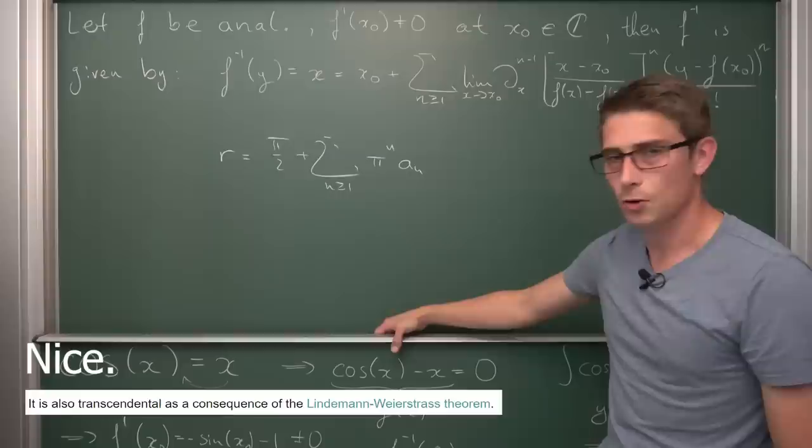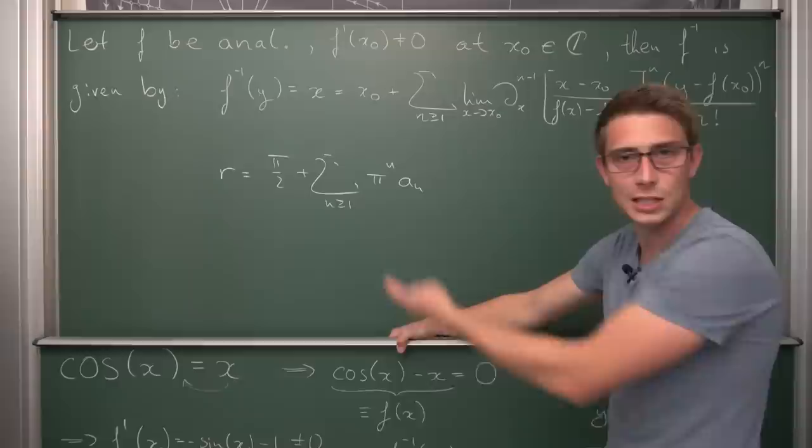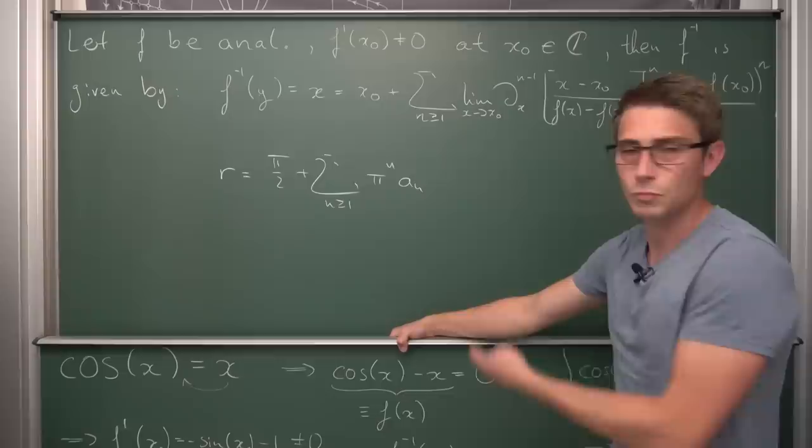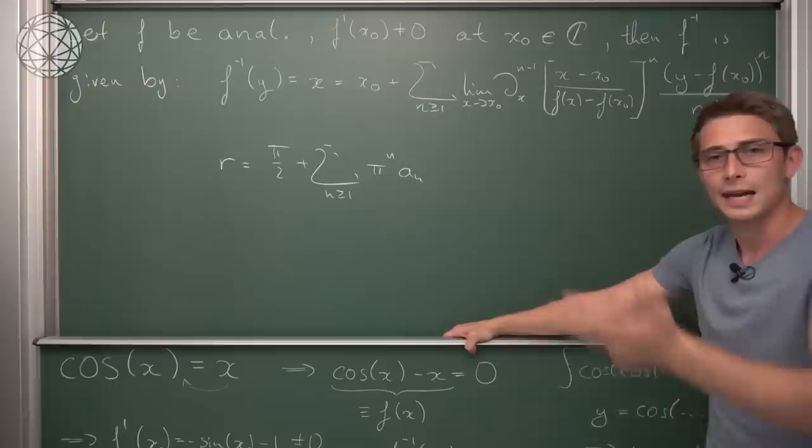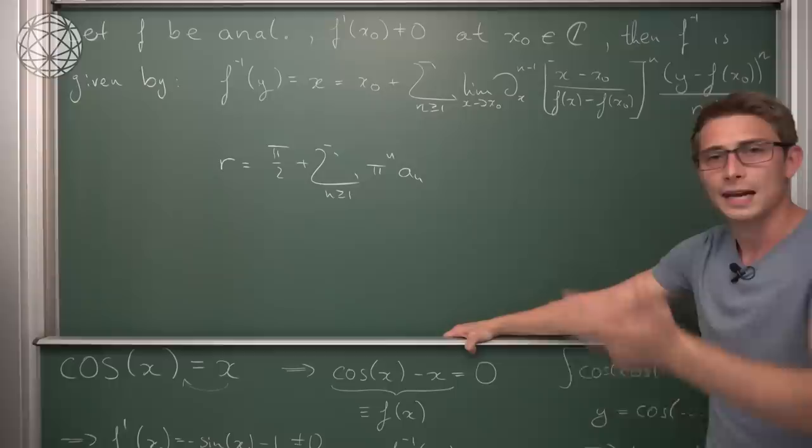Sometimes in mathematics the result just isn't nice, but at least we found a closed expression in the form of a Taylor series expansion — which is not bad overall. You can compute it numerically even though it converges very slowly. If you're interested in more mathematics like today's — Taylor series, derivatives, complex numbers — then I invite you to try out today's sponsor, Brilliant.